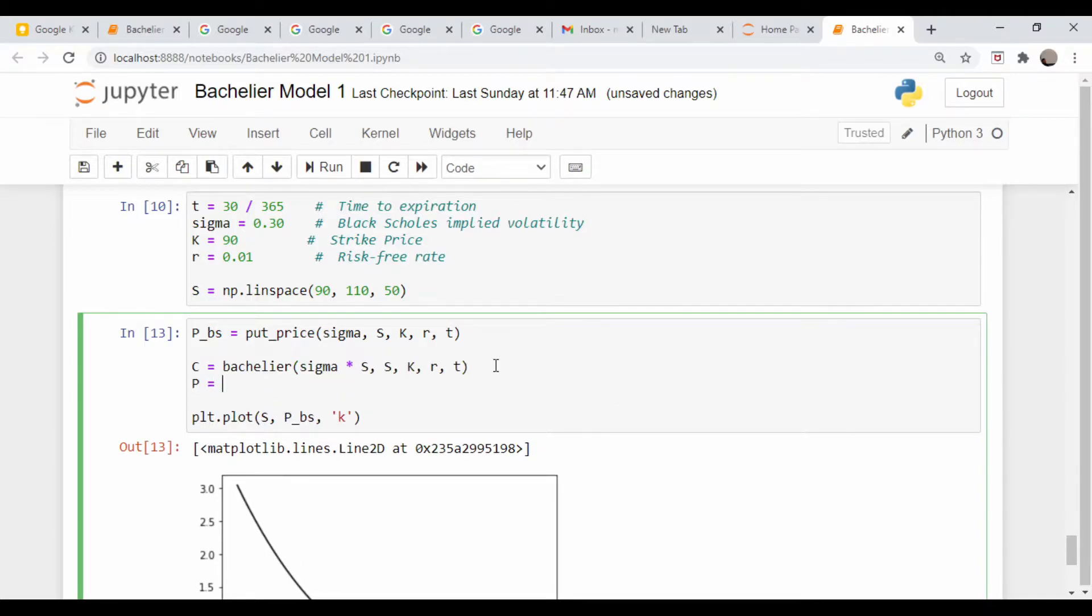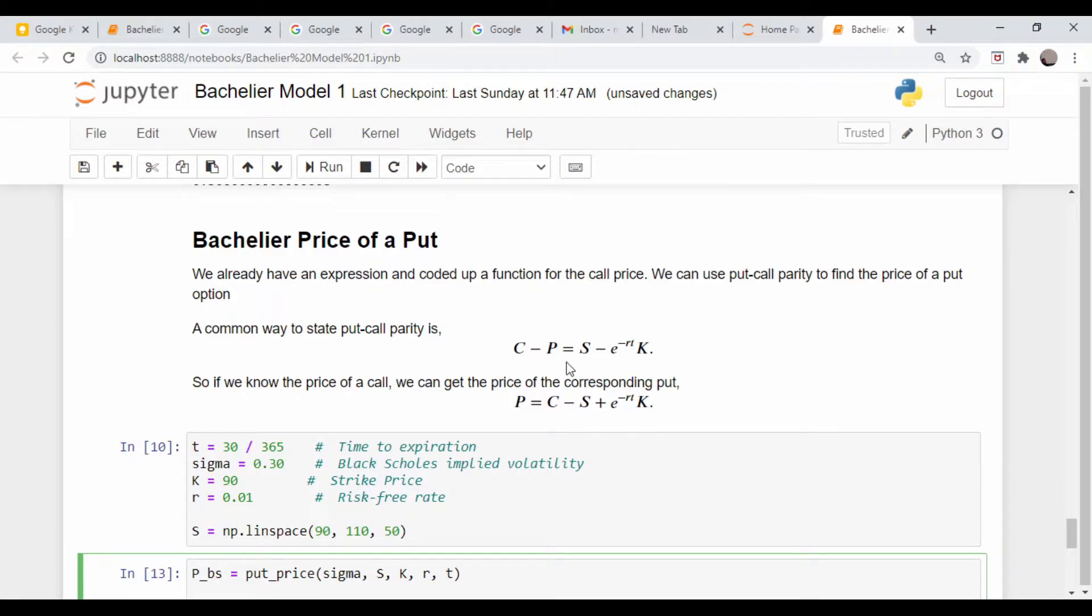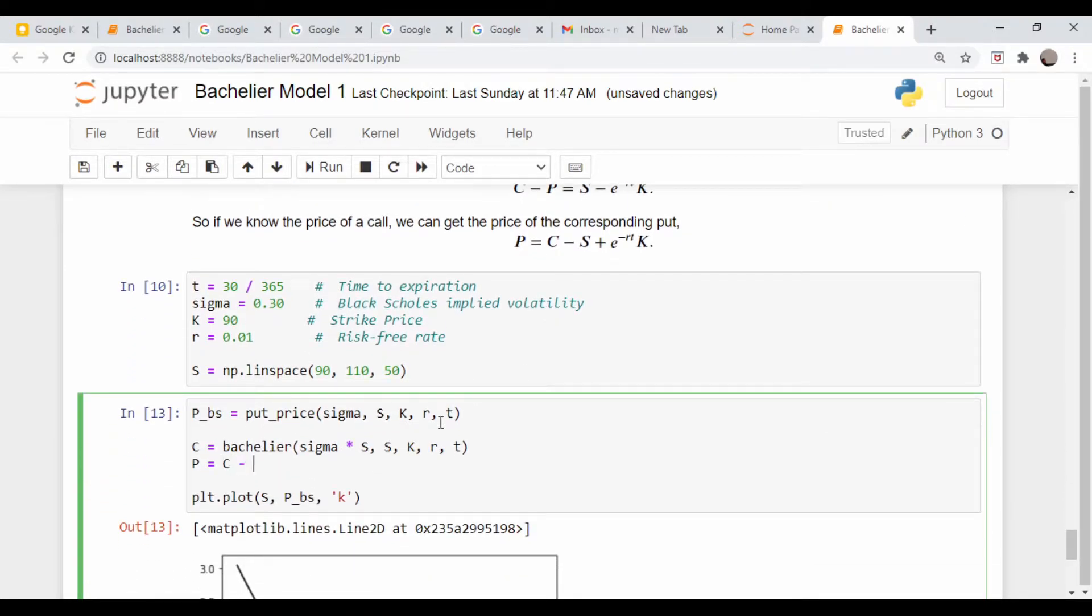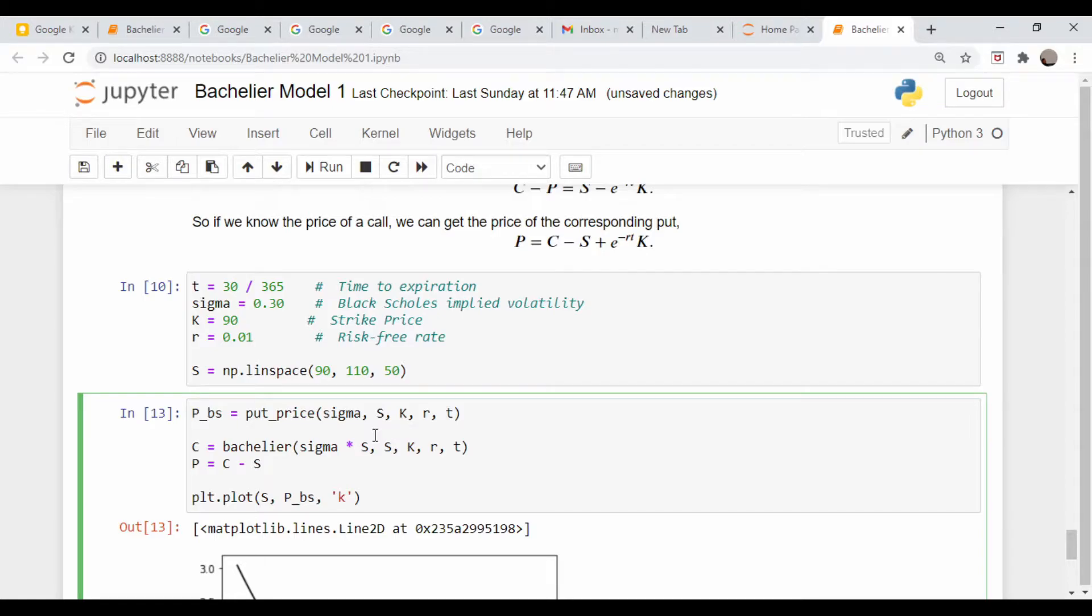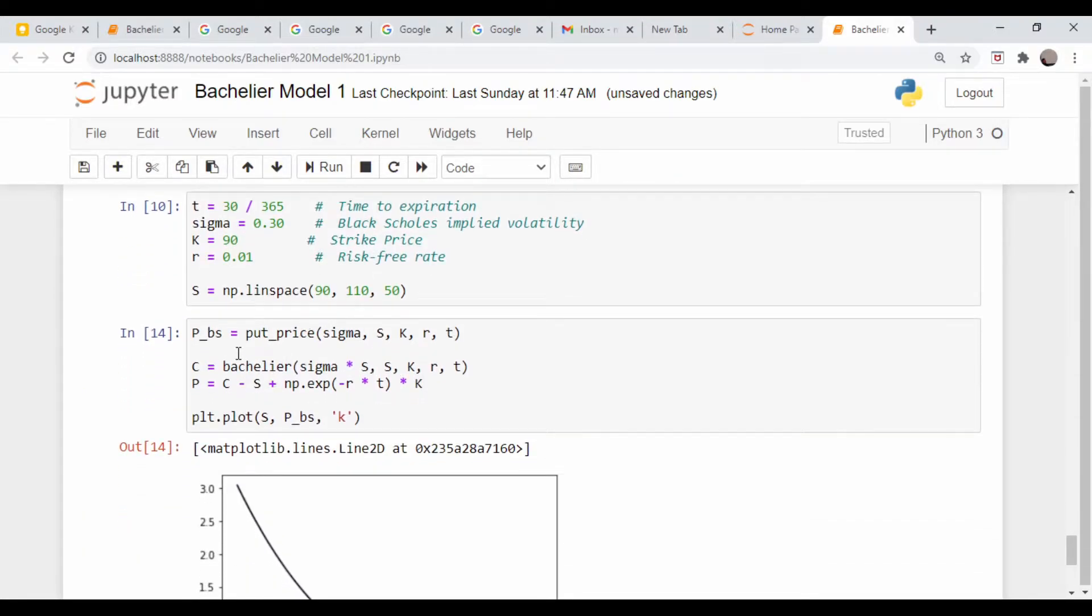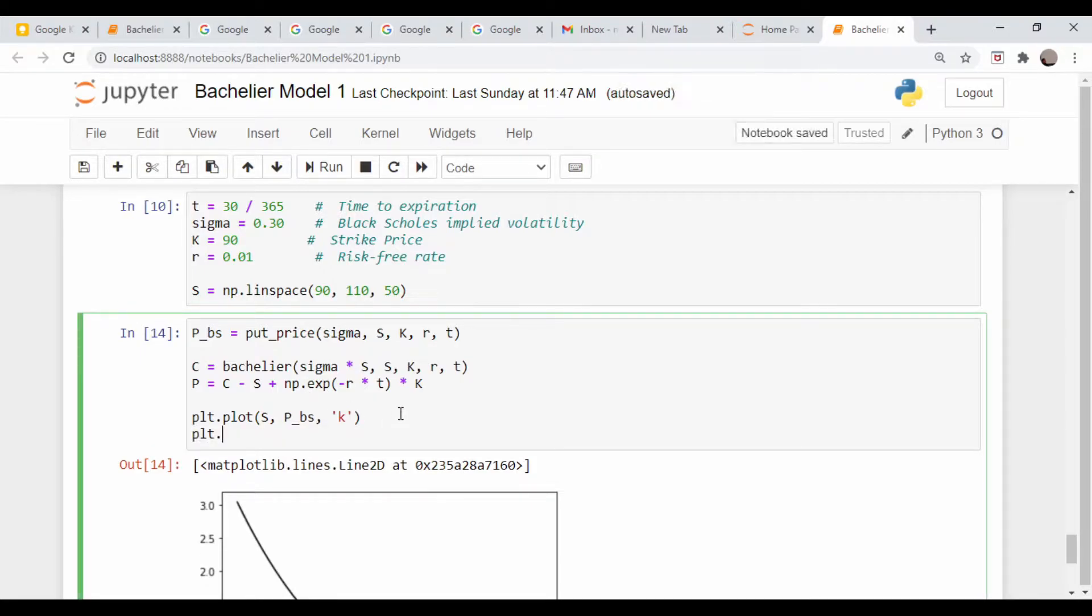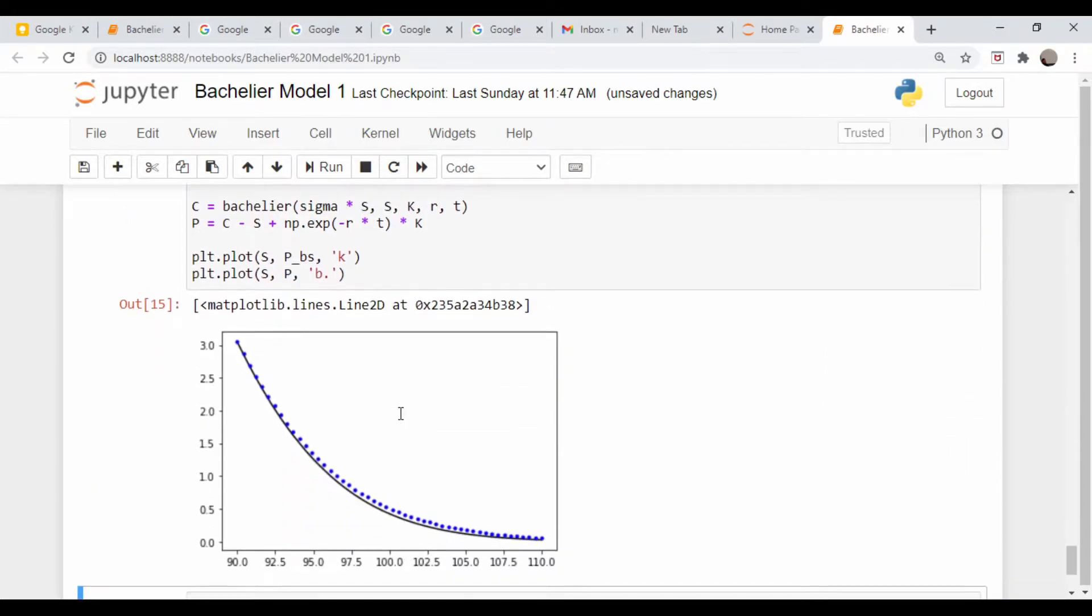Our put price is just given by this formula: C minus S plus e to the minus RT times K. Let's plot that on the same plot: PLT dot plot, S comma P, and we'll make this blue dots just as we did above. And we get basically the same curve back.